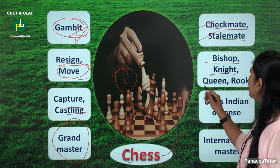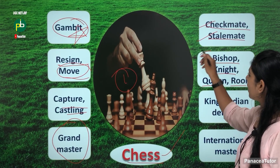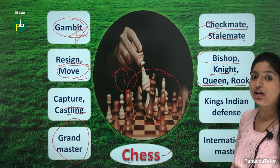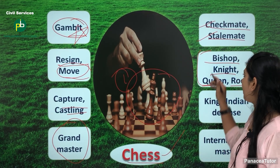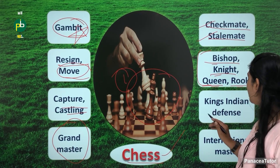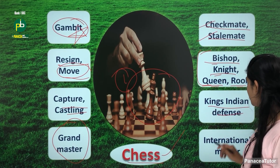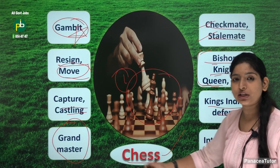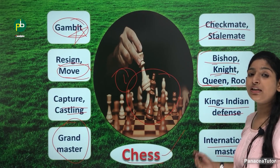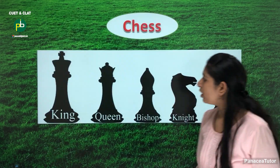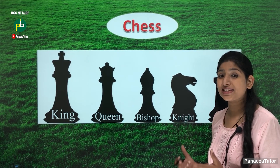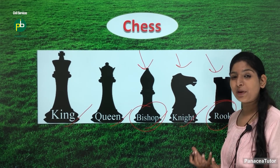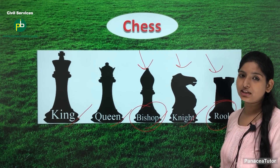Bishop, knight, queen, and pawn — these are all chess pieces. We call them bishop, knight, queen and pawn. King's Indian defense and international master — like the grand master title, the international master title is also given in chess. These are all chess pieces and particular terms associated with the game.